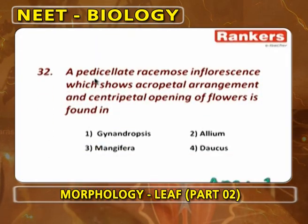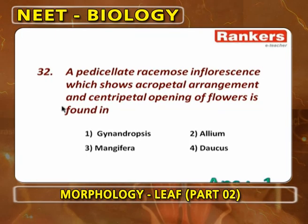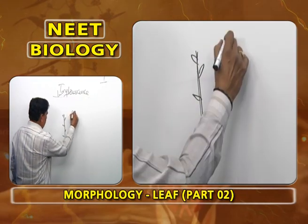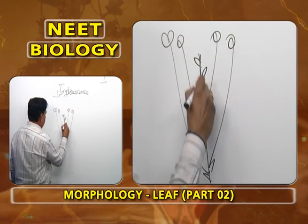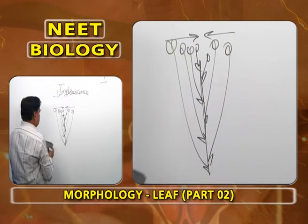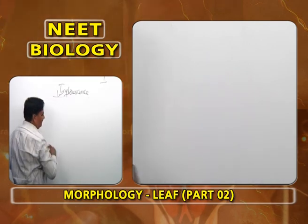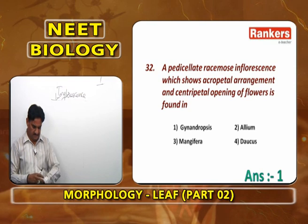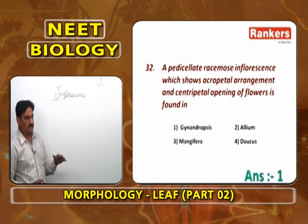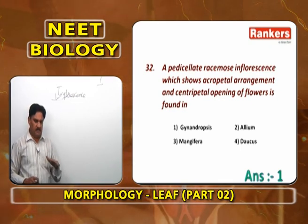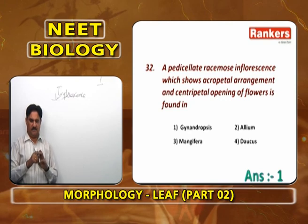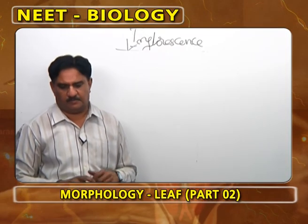A pedicellate racimose inflorescence showing acropetal arrangement and centripetal opening of flowers is found in Gynandropsis. In Gynandropsis, peduncle grows indefinitely, flowers are arranged in acropetal succession, lower flowers show long pedicels, upper flowers show short pedicels, so all flowers are at the same height — centripetal opening. Gynandropsis shows all three basic characters of racimose inflorescence. Allium and Dolichous are simple umbels; Mangifera is compound raceme.